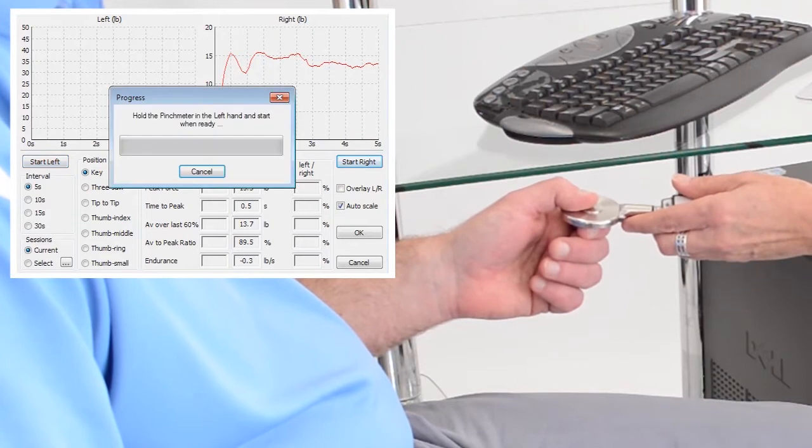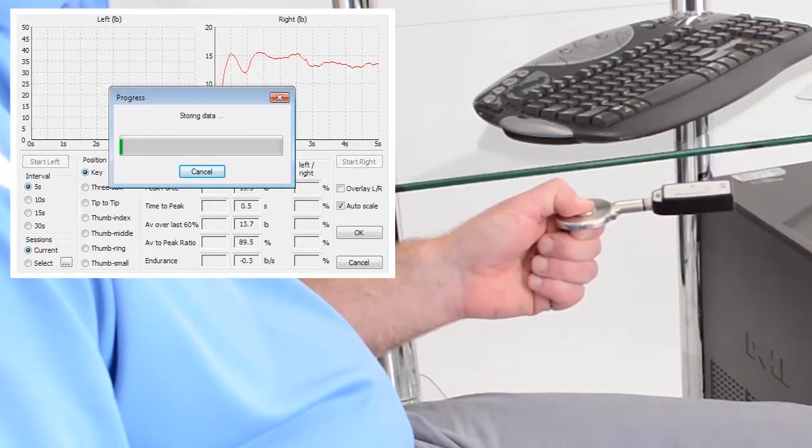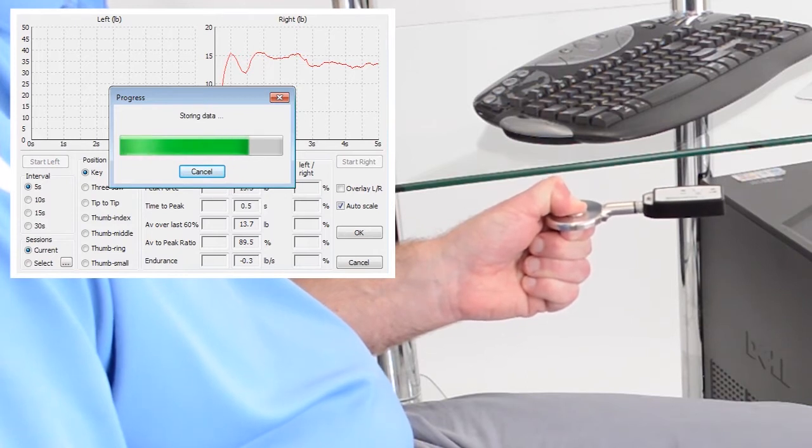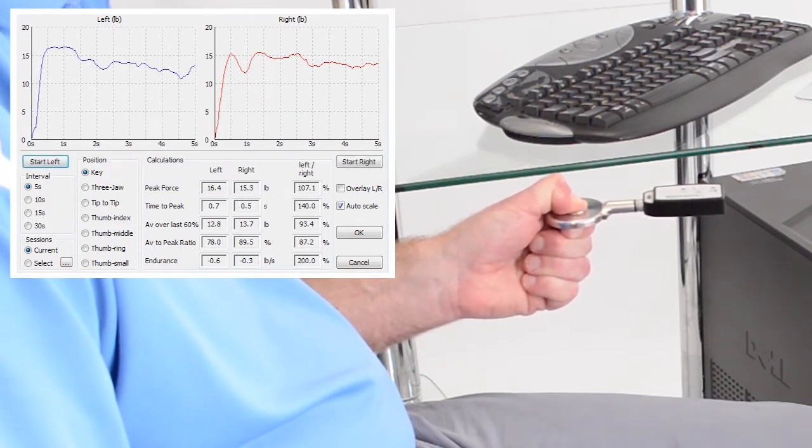As for the dynamometer, so with the pinch meter, e-link software automatically calculates the average coefficient of variation percentage and includes sustained pinch testing.